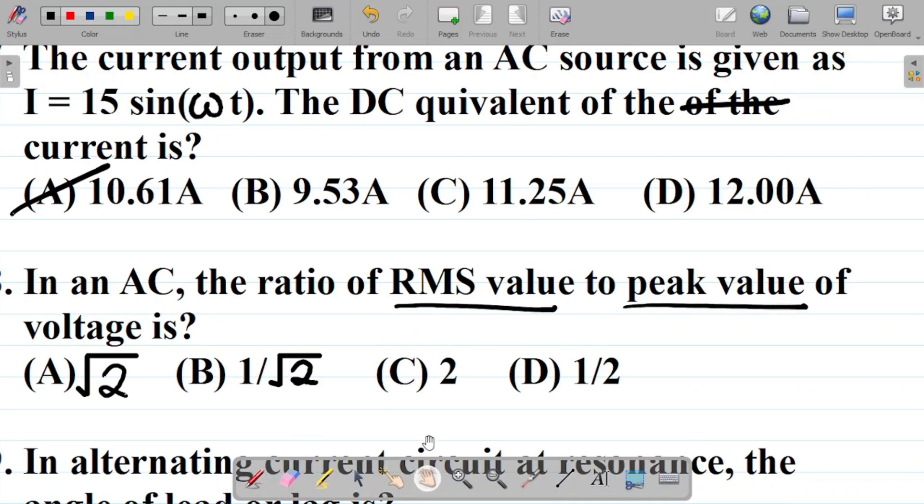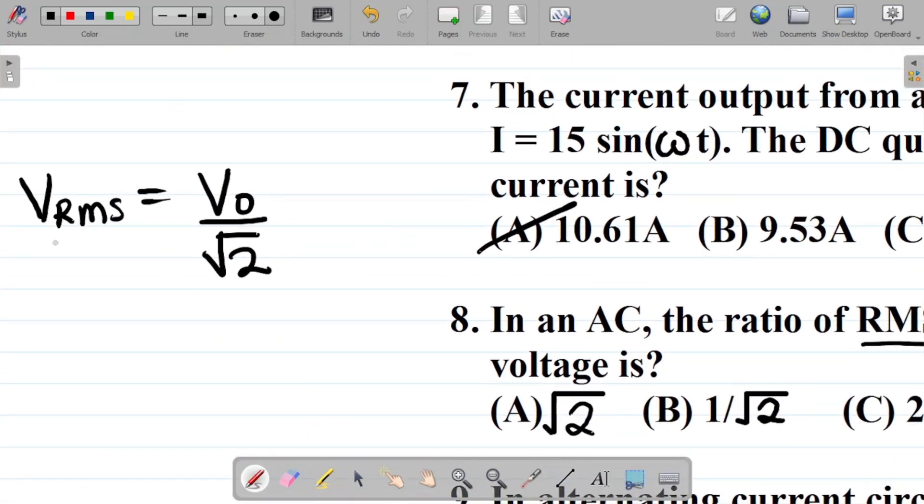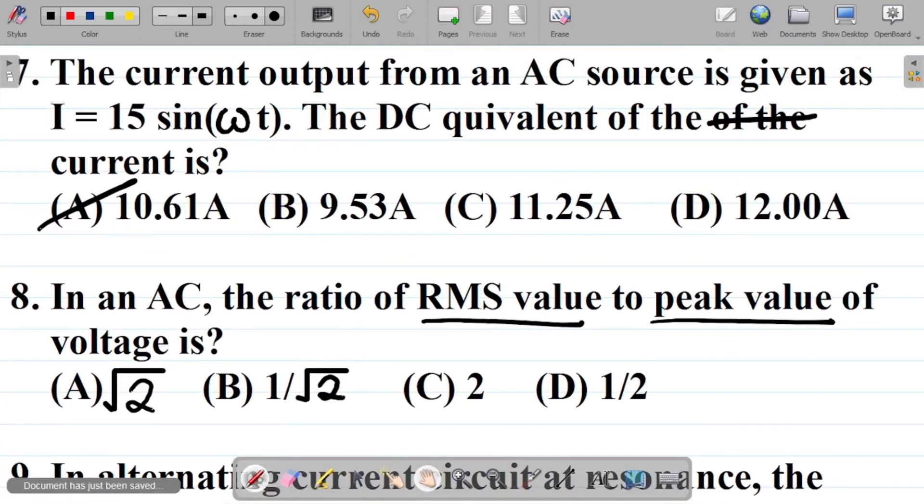That means RMS should be at the numerator, then peak value at the denominator. To achieve that, I'll put over 1 here and these two will swap. The peak value comes down, and I'm having V RMS over V naught, the peak value, equal to 1 over root 2. This is mathematically correct. Hence we can see that the ratio of the RMS value to the peak value of the voltage is 1 over root 2, and that's option B.